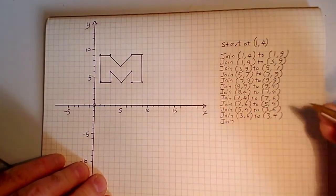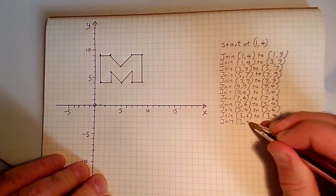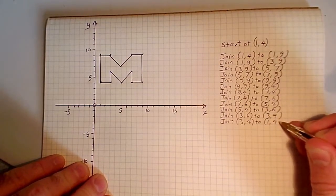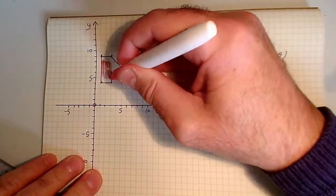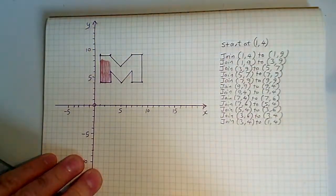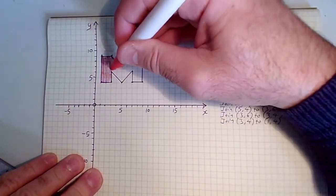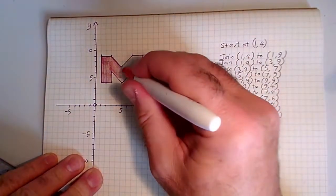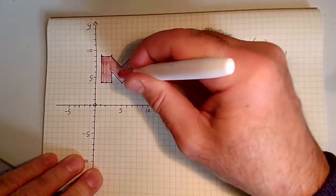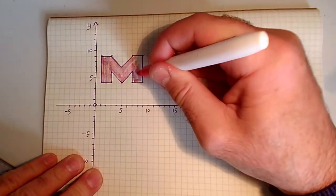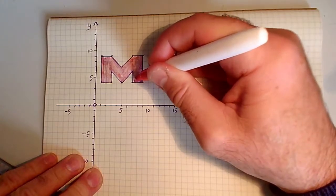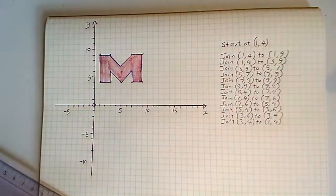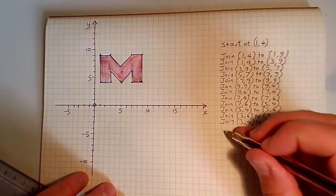And then finally back to where I started: join three, four to one, four. Then I want them to color that in — let's say red. This isn't a very good red pen — wearing out a little bit — but just about almost doing the job. Yeah, you get the idea. So the instruction would be: fill in red.